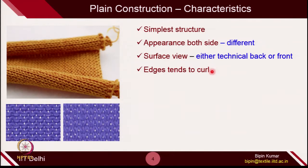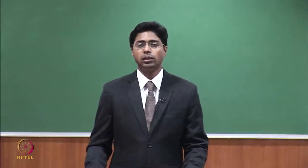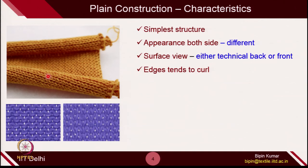Another characteristic of single jersey fabric is that it curls from the edges, which we covered in week 3. Fabric curling is one of the basic problems of single jersey fabrics, which is why we go for double jersey structures. The fabric curls either in the course direction or the wales direction, depending on where you are folding it.